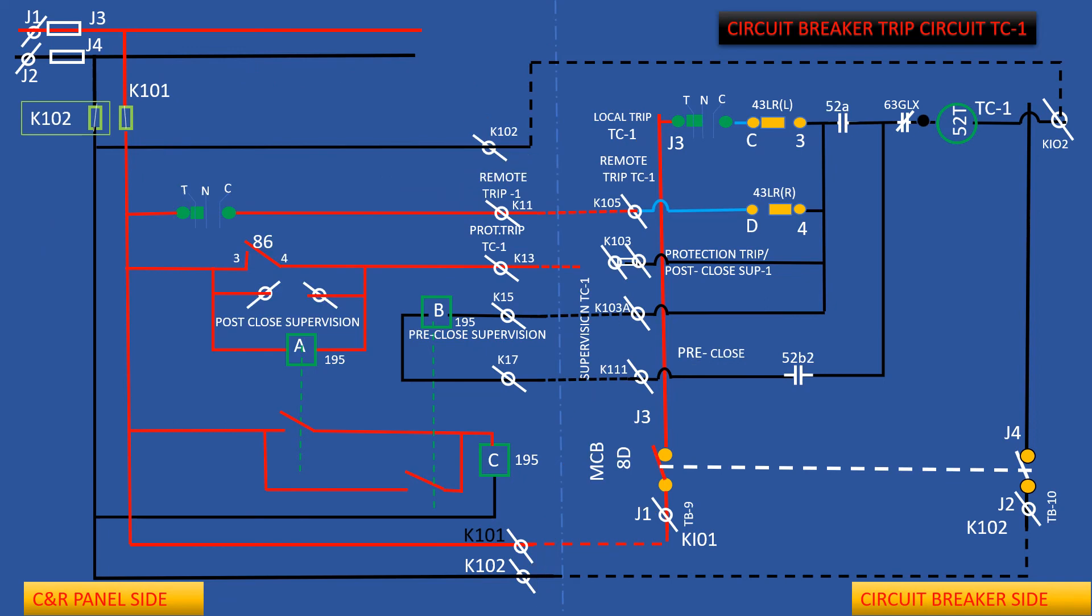The same procedure has to be followed either at pre-close or at post-close trip circuit. Only difference is contact conditions at 52a and 52b auxiliary contacts. Before closing the circuit breaker, 52b will be closed and 52a will be opened. After closing the circuit breaker, it will be reversed - 52b will be opened and 52a will be closed.